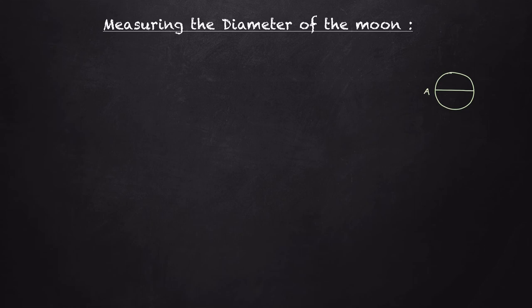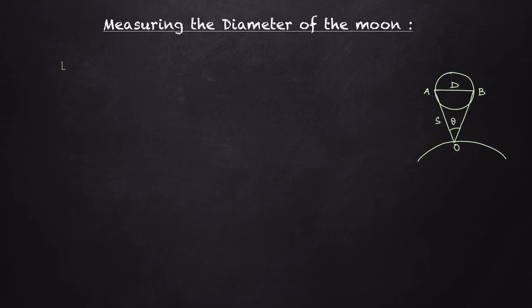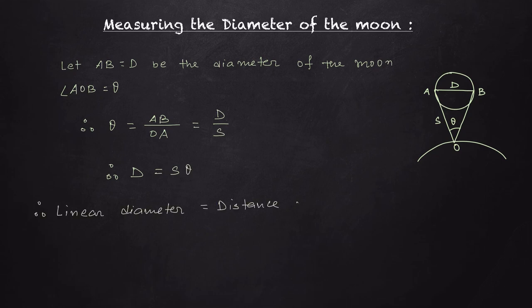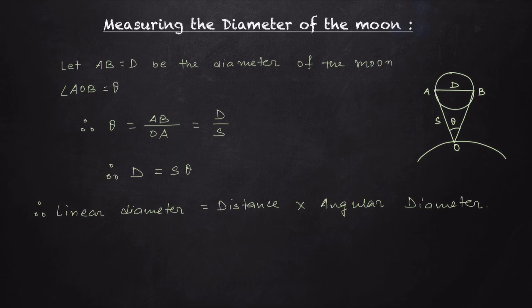Let AB be the diameter of the moon. Let us choose a point of observation on Earth, say O, and from O with a telescope we can measure the parallax angle by focusing on the two points A and B. Let the parallax angle AOB be theta, and AB be D, the diameter of the moon. Applying the formula: theta equals AB over OA, which equals D over S, so D equals theta times S. By this formula, the linear diameter D equals distance times angular diameter. To determine this, we need to know S and theta. If one knows theta and S, then one can measure the diameter.